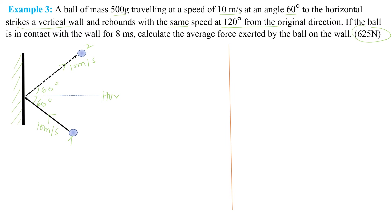If the ball is in contact with the wall for 8 milliseconds, that will be dealt with in our calculations. What we need to understand is that the ball strikes the wall at 60 degrees to the horizontal, so the momentum has two components — a vertical component and a horizontal component — because the velocity is inclined at an angle. If the velocity were normal to the wall, the momentum would have only one direction. Therefore, we have to first resolve the velocity.